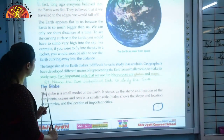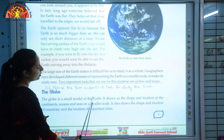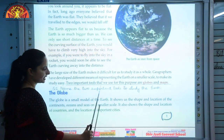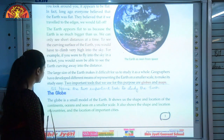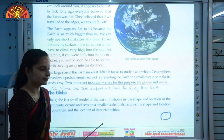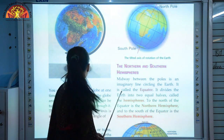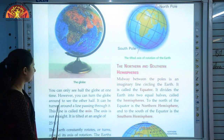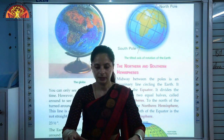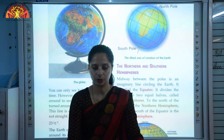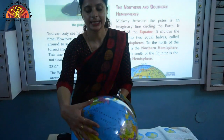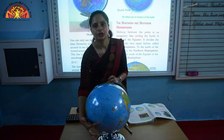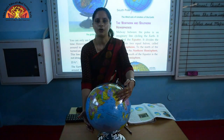The globe is a small model of the Earth. It shows us the shape and location of the continents, oceans, seas, and the location of important cities. You can only see half the globe at one time; however, you can turn the globe around to see the other half.